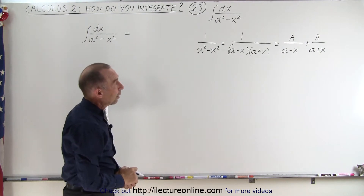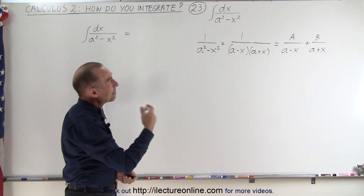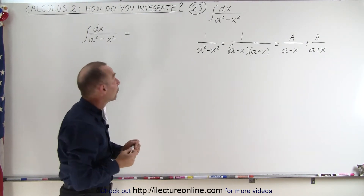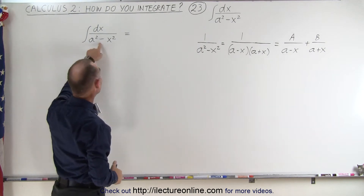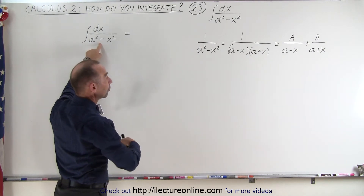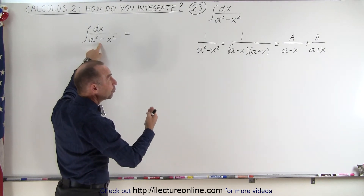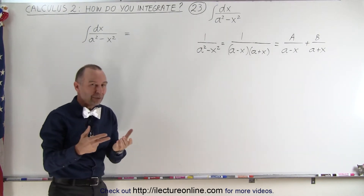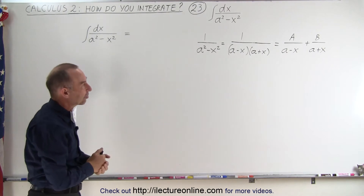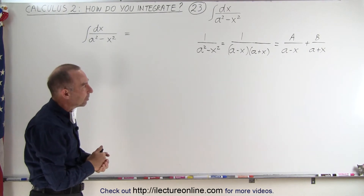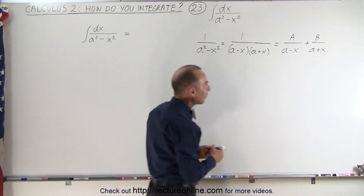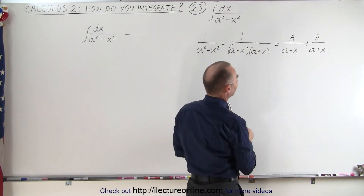Now all we have to do is figure out what A and B are equal to, and then we can write this as the sum of two simpler fractions that we can actually integrate quite easily. So let's go ahead and figure out what A and B are.